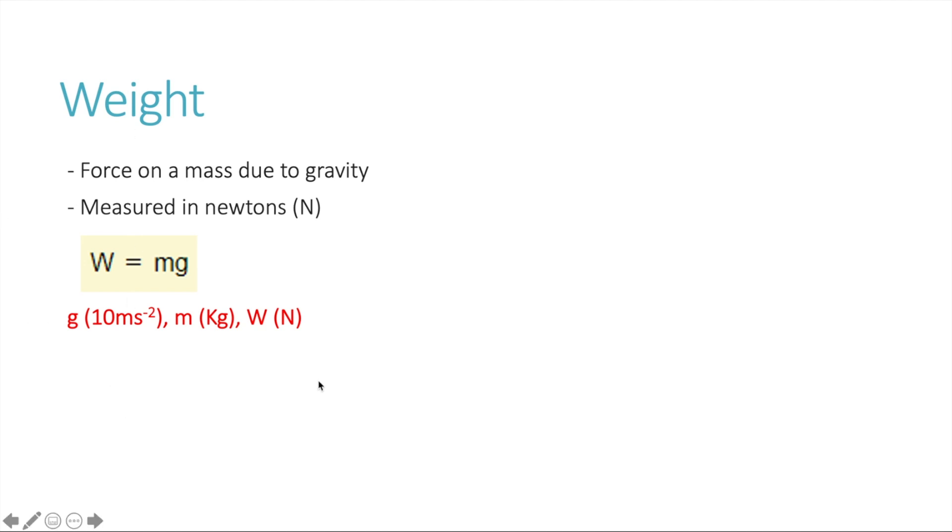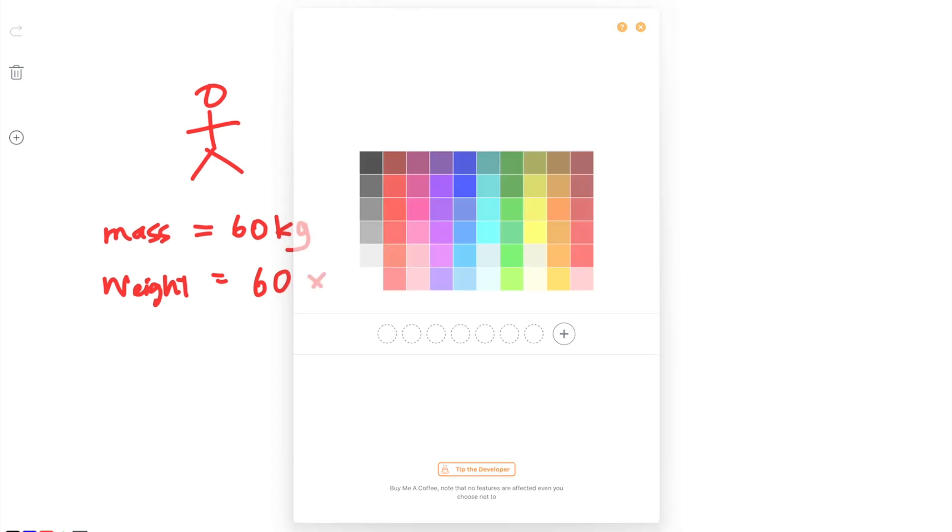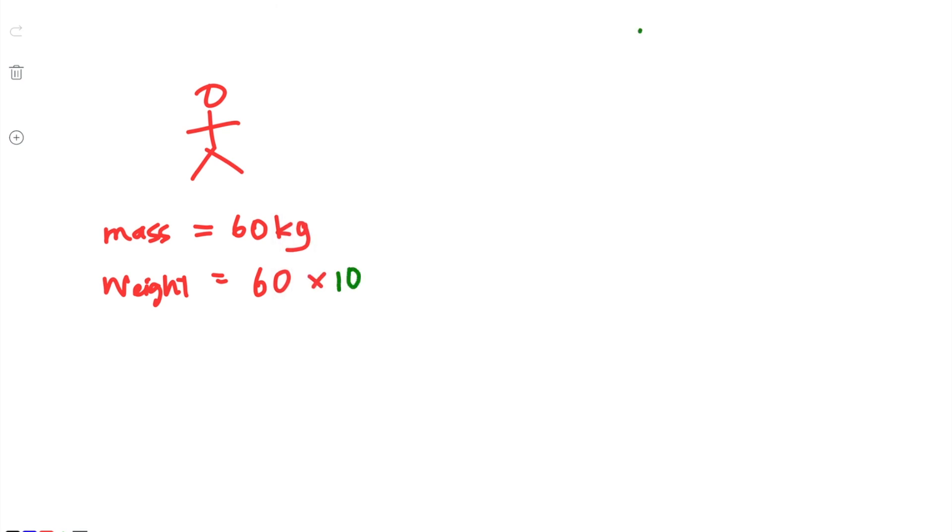So for example, if you had Person A that has a mass of say 60 kilograms, then the weight, which is actually the force, would be 60 times 10. Okay, so that's the gravity, which is constant. And so what you would get would be 600 newtons, and it's in newtons because weight is a force.